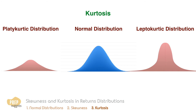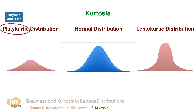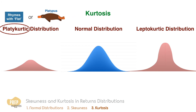How do you remember which refers to the more peaked and which to the less peaked? One way is that 'flat' rhymes with 'plat,' so the less peaked is platykurtic. Alternatively, you could remember the image of the platypus, which is quite flat. A distribution is mesokurtic if it has the same kurtosis as a normal distribution.